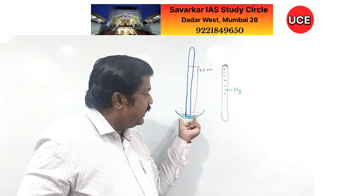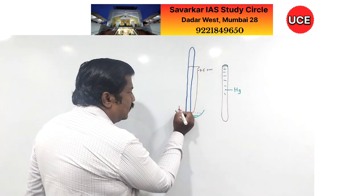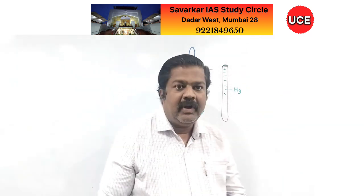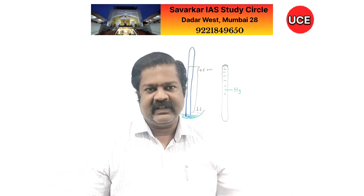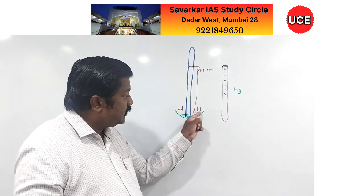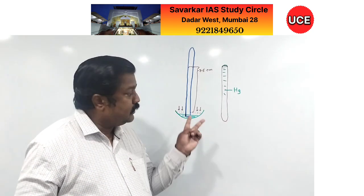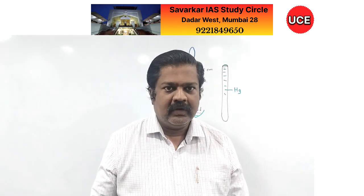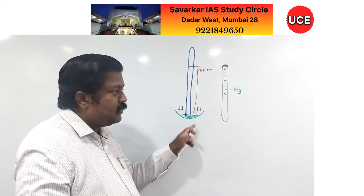The thing is that Earth has tremendous gravitational force. Because of that, Earth is pulling the atmosphere — atmosphere means gases — towards itself. As a result, pressure is there, which is called atmospheric pressure. We are getting atmospheric pressure acting over here on the mercury in the dish. Because of that pressure, mercury is not able to fall down. It falls a little bit and then equilibrium is established.